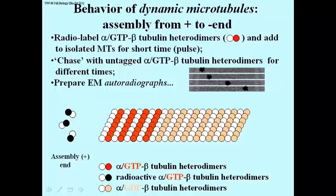The experiment is to add radioactive alpha-beta heterodimers bound to GTP — those should be shown as black balls — and to add them to isolated microtubules for a very, very short time. After that short pulse of labeling, allowing the microtubule to grow a little bit using some of the radioactive heterodimers, the sample is centrifuged. The microtubules are brought down to the bottom of the tube, the supernatant is thrown away — meaning any remaining radioactive alpha-beta heterodimers are discarded — and to the sedimented microtubules, fresh solution containing non-radioactive alpha-beta heterodimers is added.